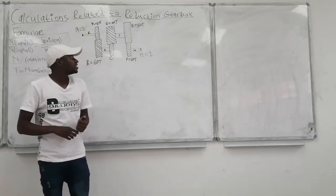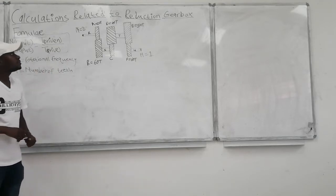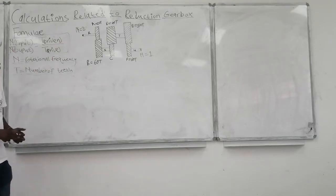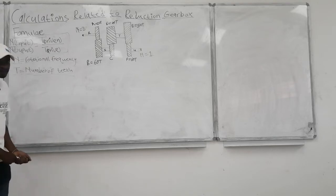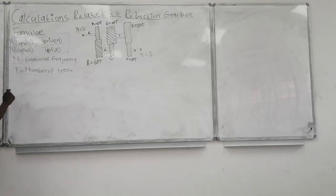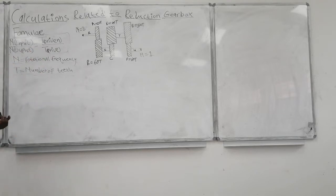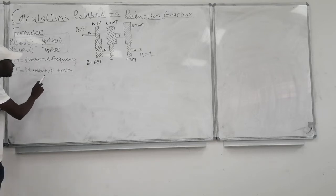Good day everyone. Today we are going to deal with calculations related to a gearbox. When doing this calculation we are going to use the formula N input divided by N output equals T driver divided by T drive, where N stands for rotational frequency and T stands for number of teeth.